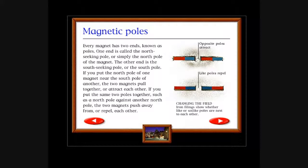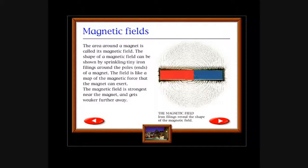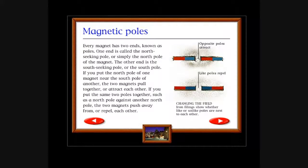Magnetic poles: Every magnet has two ends known as poles. One end is called the north-seeking pole or simply the north pole of the magnet. The other end is the south-seeking pole or the south pole. If you put the north pole of one magnet near the south pole of another, the two magnets pull together or attract each other. If you put the same two poles together, such as the north pole against another north pole, the two magnets push away or repel each other. Changing the field: Iron filings show whether like or unlike poles are next to each other. Good luck getting those iron filings off.